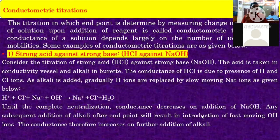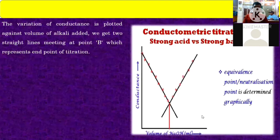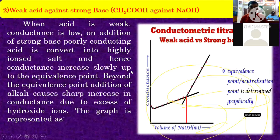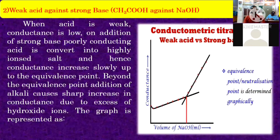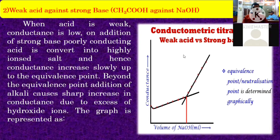Today we will discuss the second type of conductometric titration, that is weak acid against strong base. Here we take weak acid CH₃COOH against strong base NaOH. Both are acid-base type reactions with formation of salt and water. But in this reaction, it is a slow reaction because acetic acid is a weak acid and cannot dissociate easily.